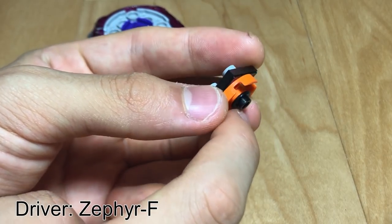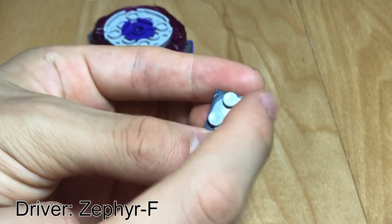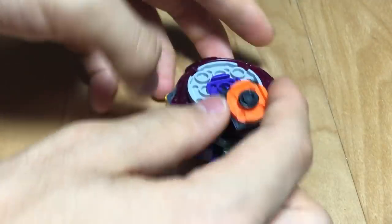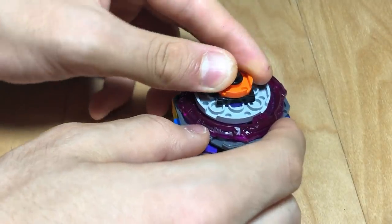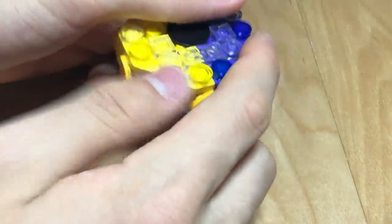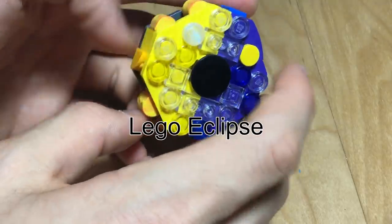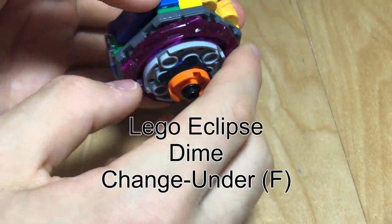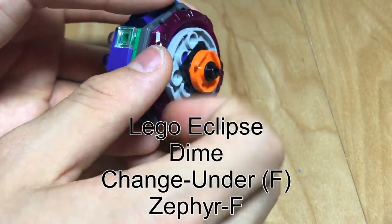Finally, the driver is Zephyr F, basically a free-spin version of Zephyr, which I guess is pretty much sharp, except it's hollow. So yeah, there is the full combo of Lego Eclipse Dime Change Under F Zephyr F. Wow, that is a pretty long name.